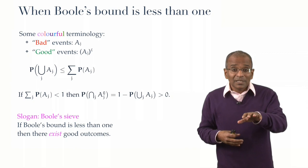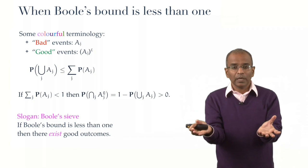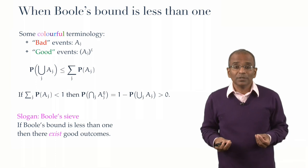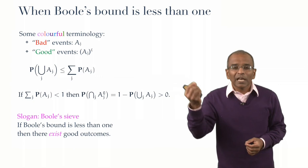This seems like very stony ground. But look, out of all of this, a principle has emerged. The setting is one where we are doing a chance experiment. We don't know if there are any good outcomes for the experiment. Boole's Sieve, under these conditions, allows us to conclude that there exists at least one good outcome.